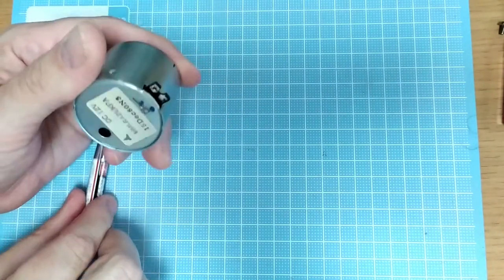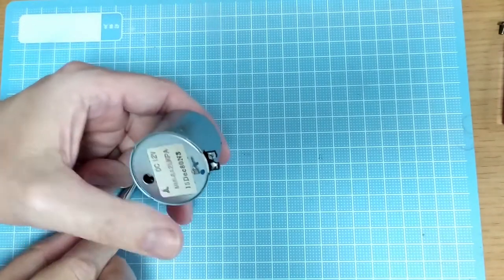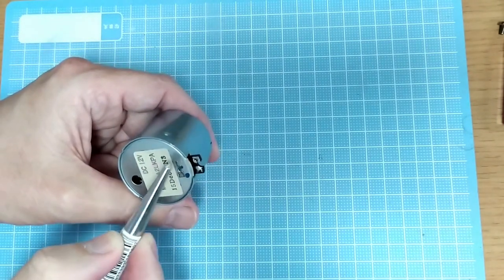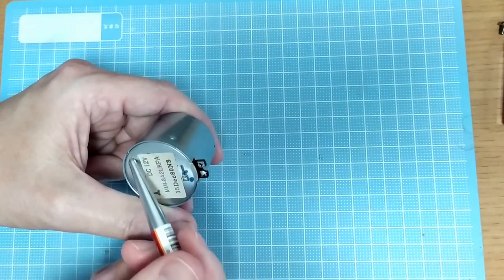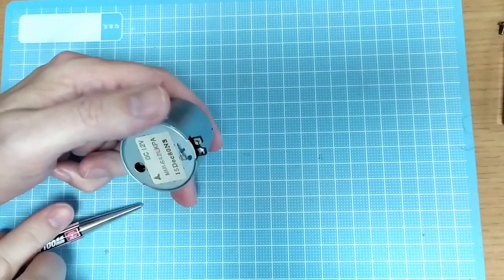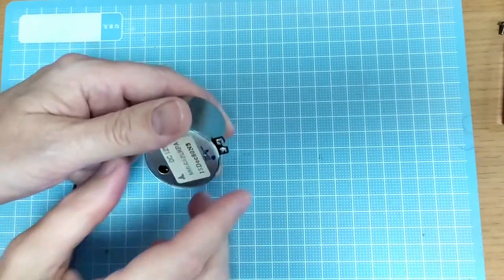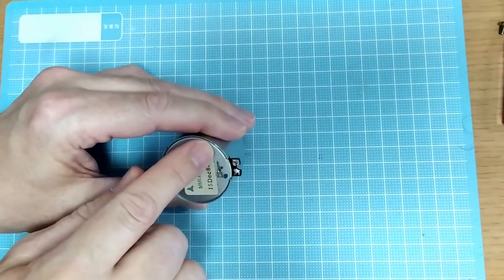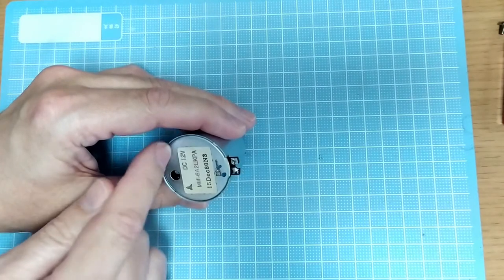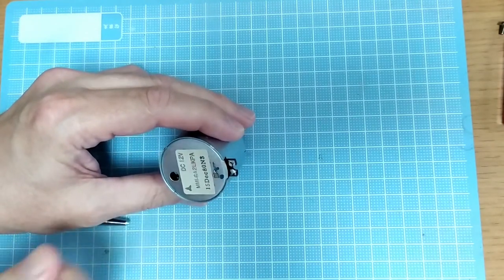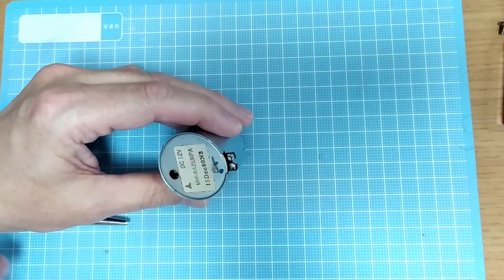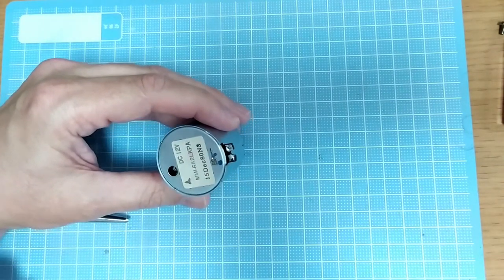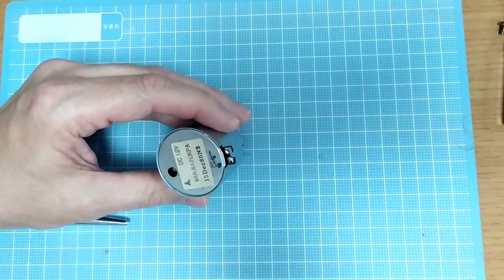To undo these tabs, I'm going to use a center punch and just knock those clear. Hopefully that'll make a better job than the way I did it on the Pioneer, where I just used a screwdriver and pliers and they ended up breaking. Hopefully we can do a little bit better than that this time.